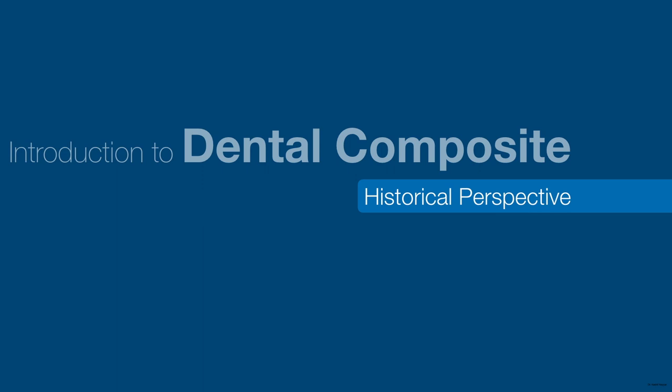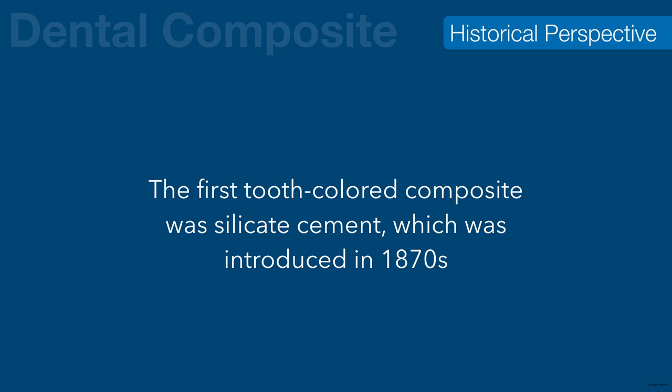Now let's start with the history and background of these materials by looking at the efforts made during the evolution of tooth-colored restorative materials, which will help us understand the physicochemical properties in a better way. The first tooth-colored restorative material was the silicate cement, used for anterior and posterior restorations, but it had drawbacks — it was weak and needed to be placed all at once, since incremental placement was not an option.